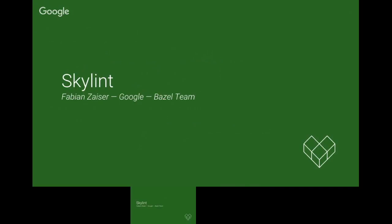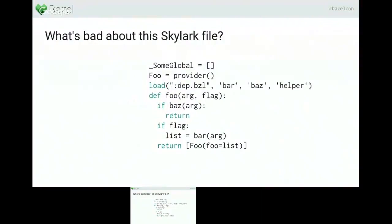Hi everyone. My name is Fabian Sizer. I've been an intern on the Bazel team, and over the last three months I've been implementing a linter for the Skylark language — like a static analyzer. In this talk I want to show you quickly what it's capable of and how you can use it. I made up an artificial example of a Skylark file to showcase everything the linter can do.